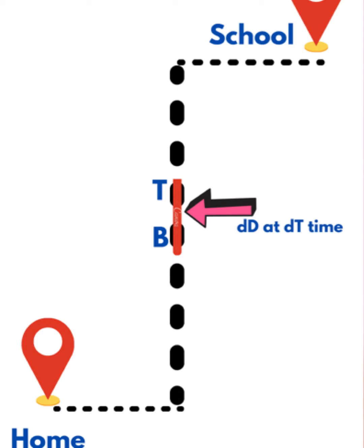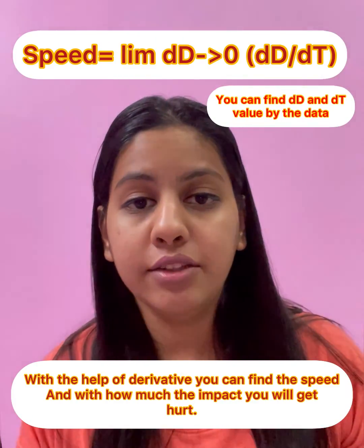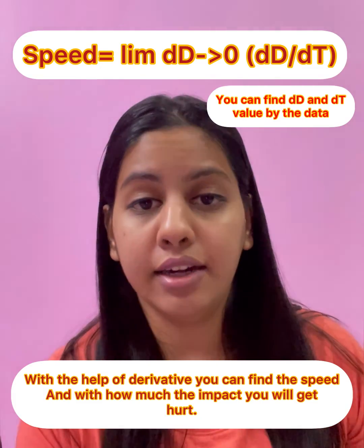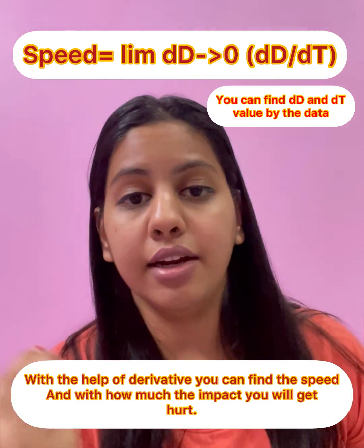The distance between these two points is delta d, which is a very small amount. Now we apply the formula: speed equals the limit as delta d tends to zero of delta d divided by delta t. This gives us the instantaneous speed at that particular point.